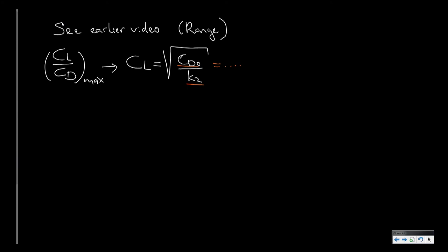Now let's fill that in into our equation. Where we have the sine of gamma is CD over CL. So let's fill in this optimum relation. Then of course, CD is equal to CD0 plus k1 times CL, and now I am taking this optimum CL. So the square root of CD0 divided by k2